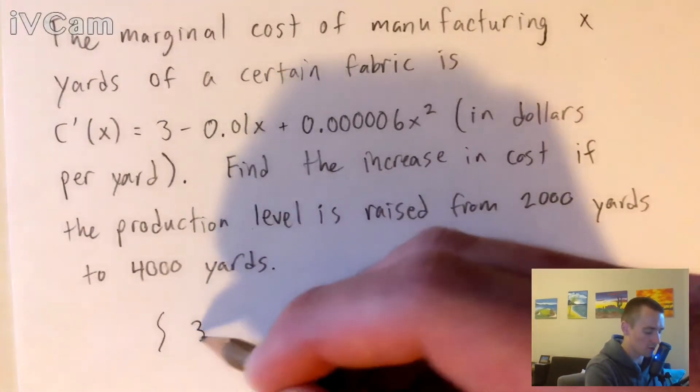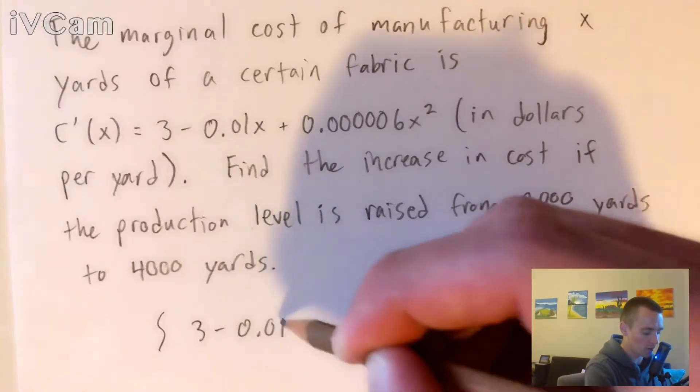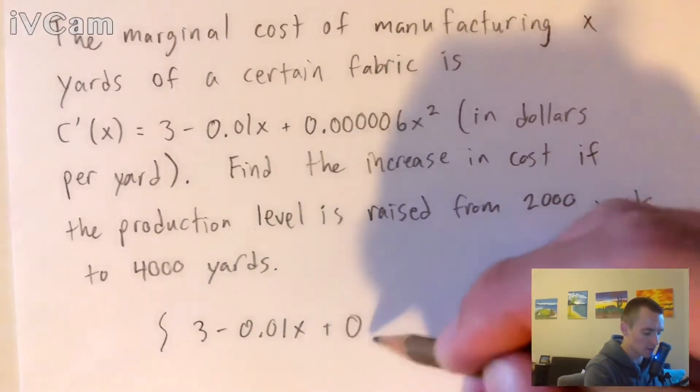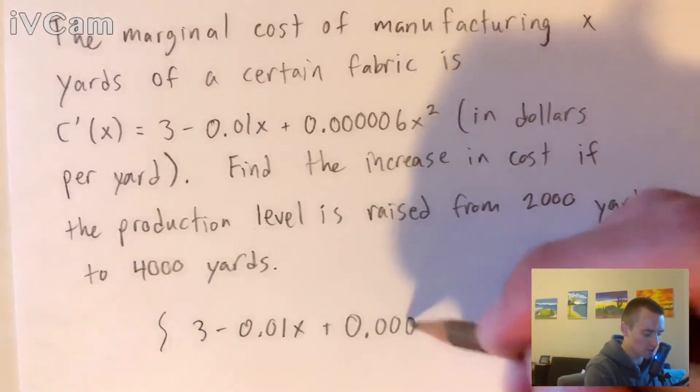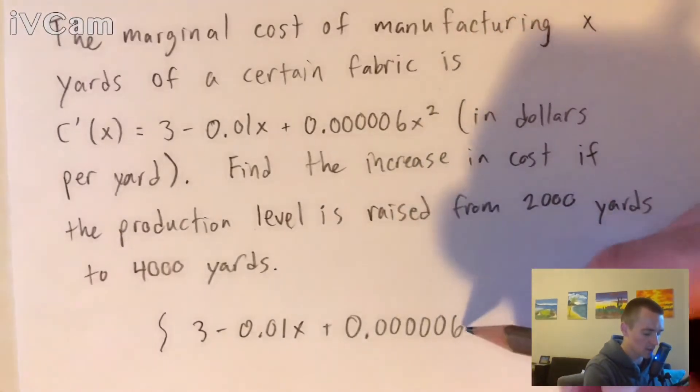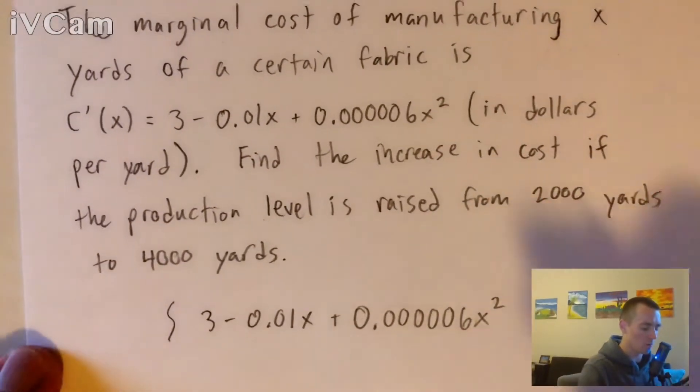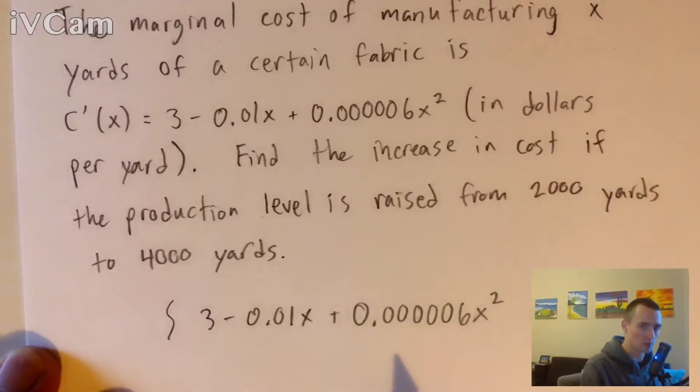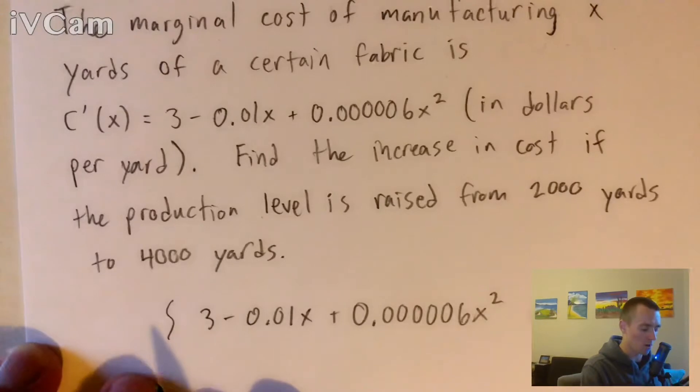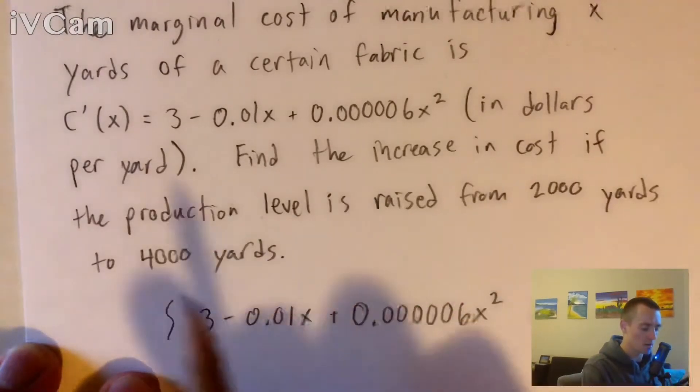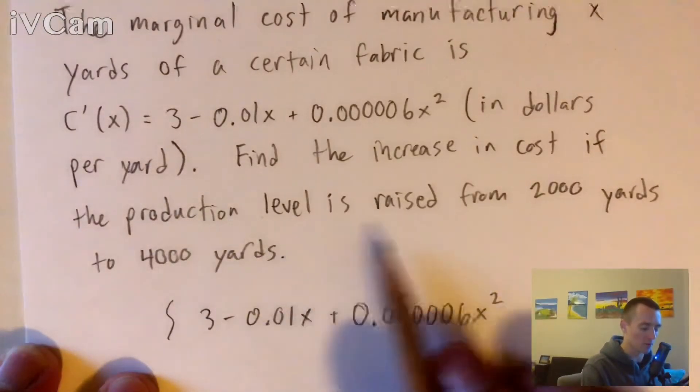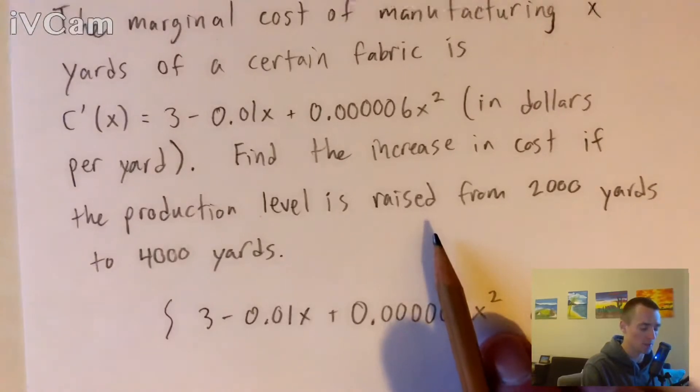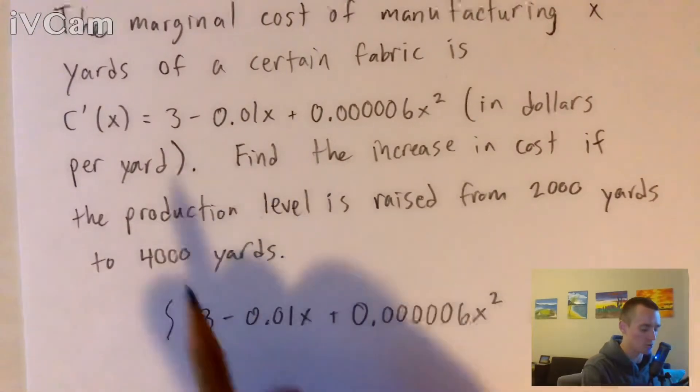So to find this solution here, we need to integrate our marginal cost function. We're going to integrate 3 minus 0.01x plus 0.00006x squared, and we want to integrate it with respect to x, obviously, because that's our variable of this function. We're going to integrate it, our bounds of our integral are going to be the levels that we want to figure out the cost difference between. So it's going to be from 2,000 to 4,000.